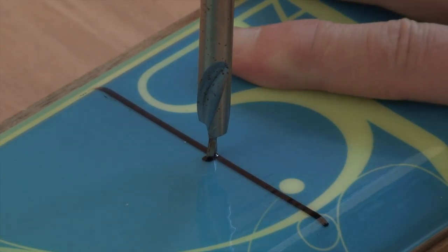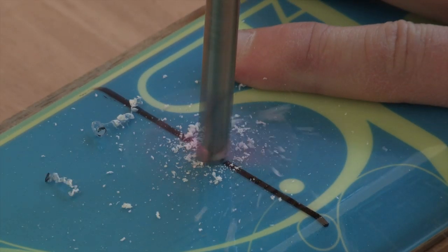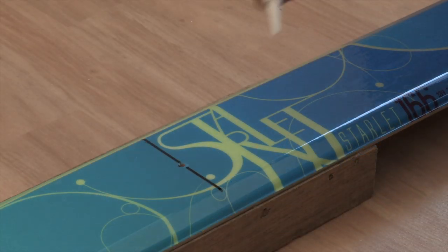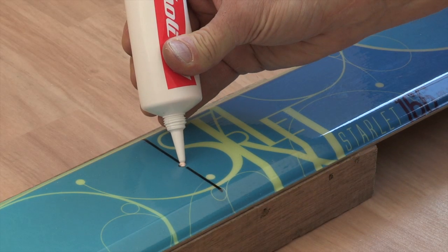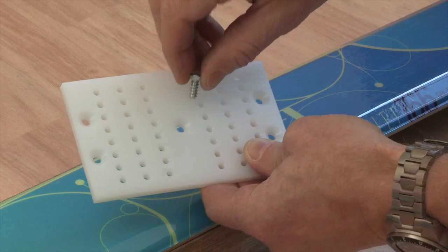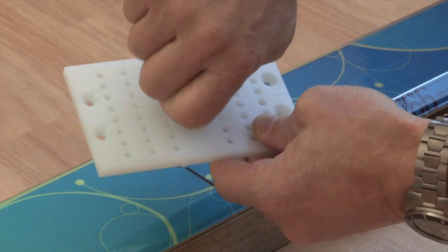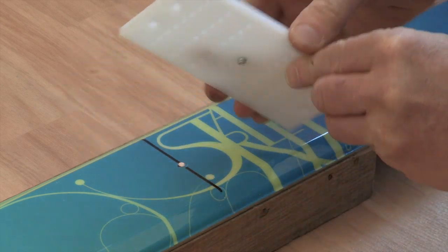Drill your first hole at the pilot indent at the centre point, clean the surface and fill with glue. Now place a screw into the centre hole of the multi-shim, then screw the multi-shim onto the ski.